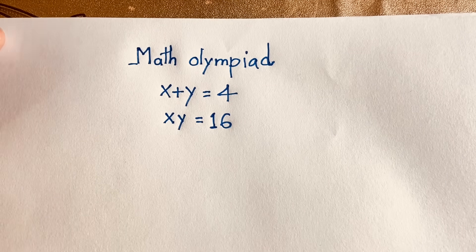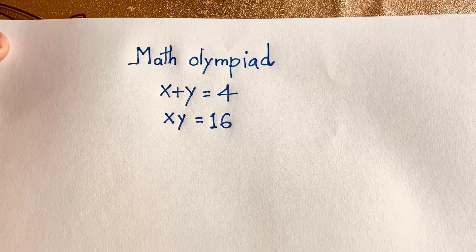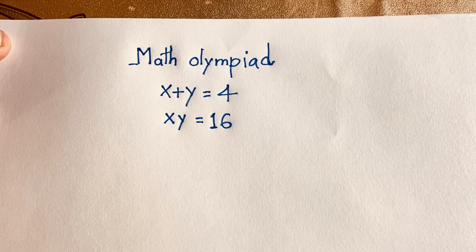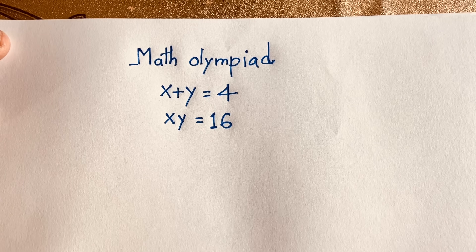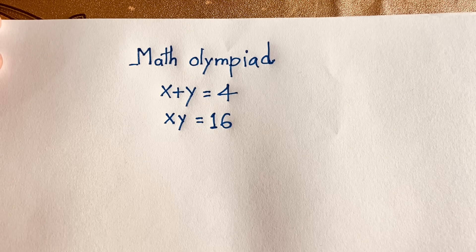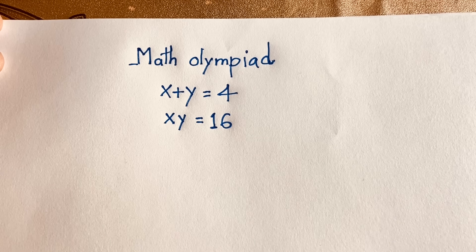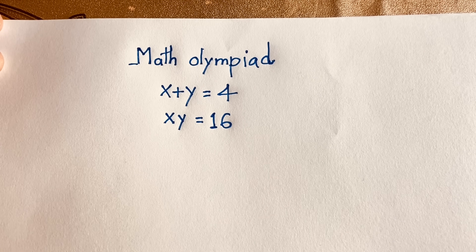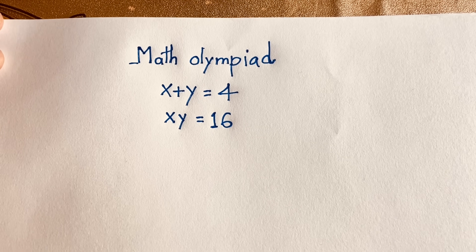Hello everyone. In this video we solve an interesting German Maths Olympiad question. The question is: x plus y is equal to 4, and x times y is equal to 16. We'll find out the values of x and y. Let's start.